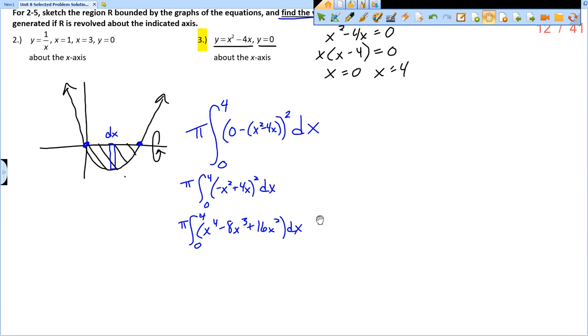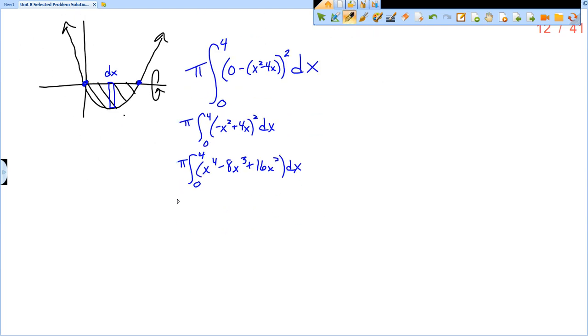So now we can integrate. Pi times integral of x to the fourth is x to the fifth over five minus 8x to the fourth over four. So two x to the fourth plus 16x cubed over three. And then we're going to evaluate from zero to four.